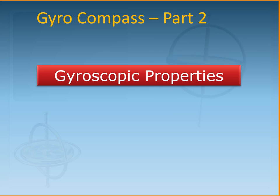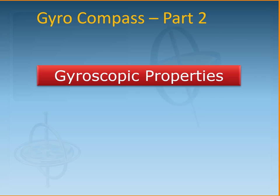In today's video we will be talking about the gyroscopic properties, specifically the property of rigidity in space or gyroscopic inertia, and the property of precession. Once you understand the properties of a gyroscope, in the third part of the video series I can tell you how these properties are used to convert a gyroscope into a gyro compass.